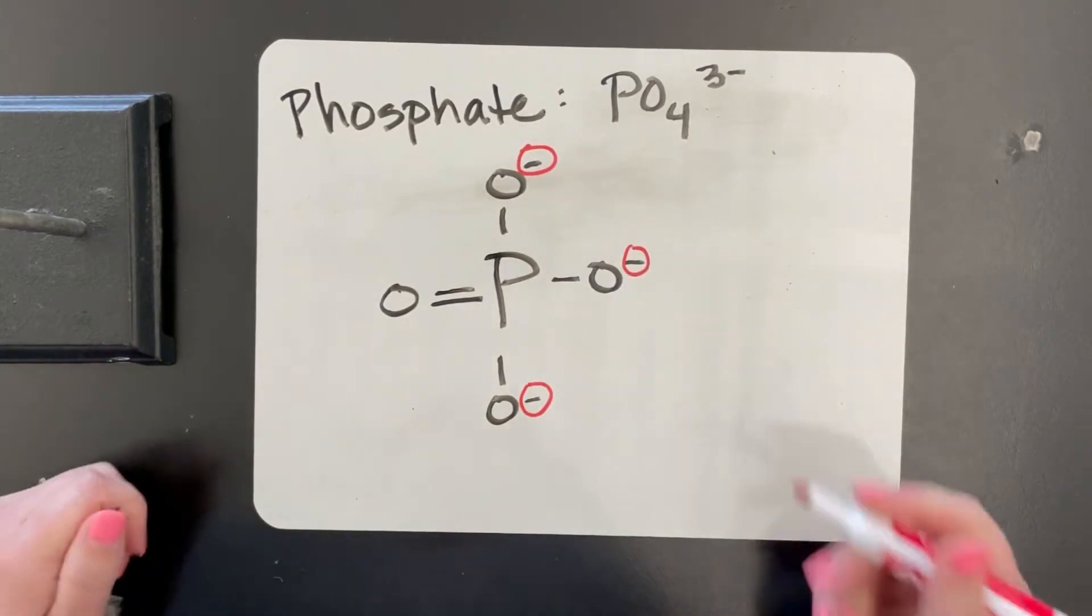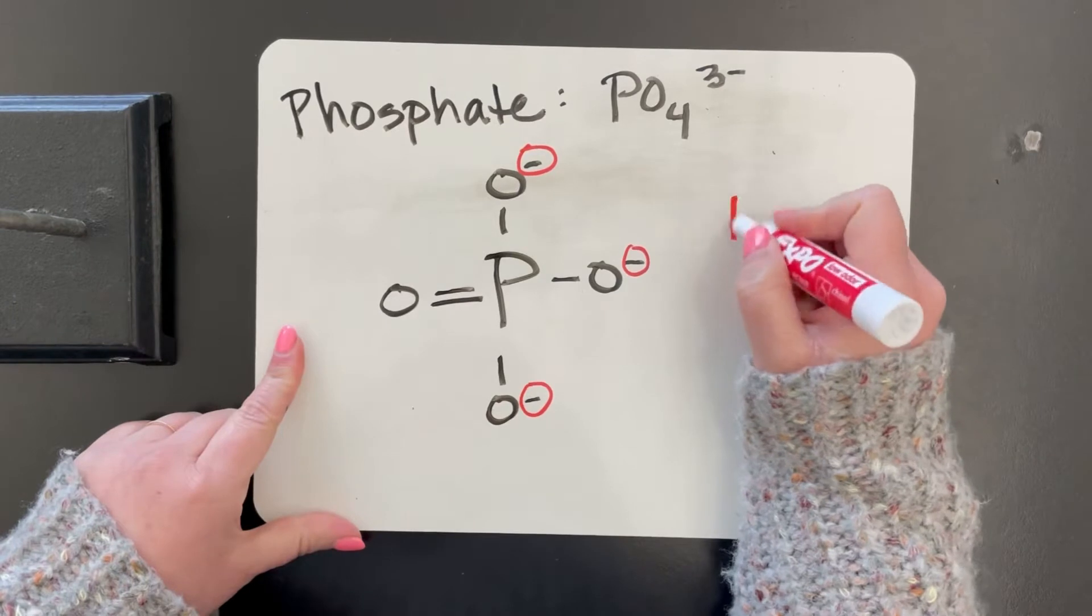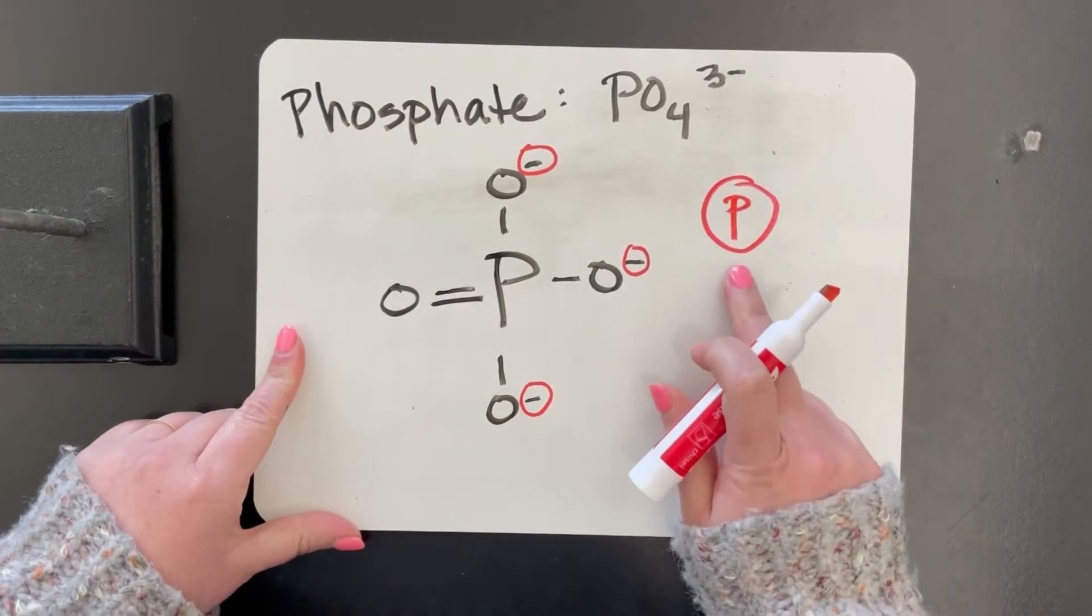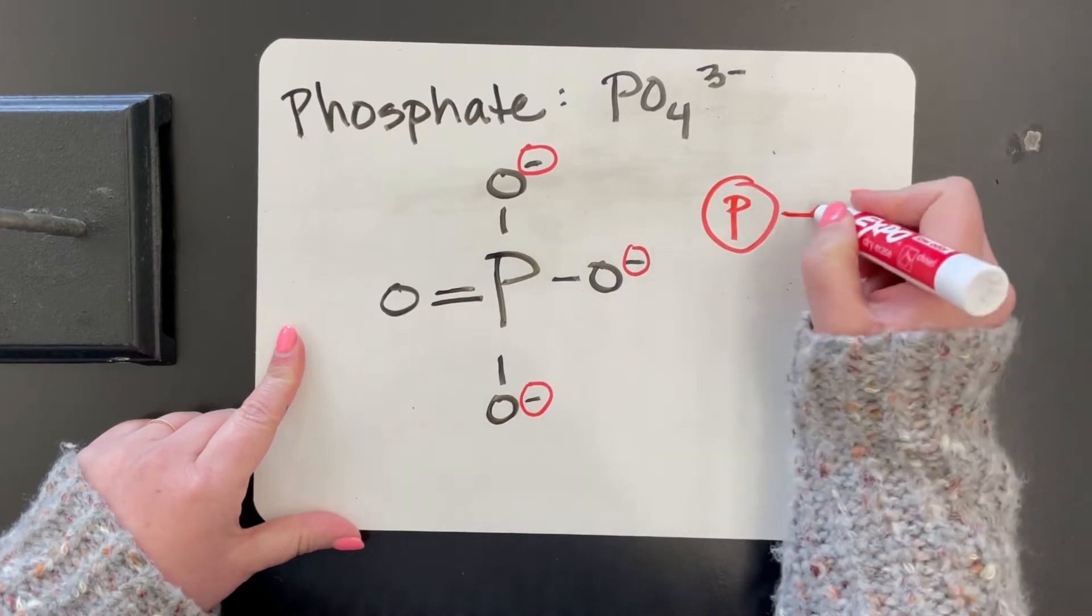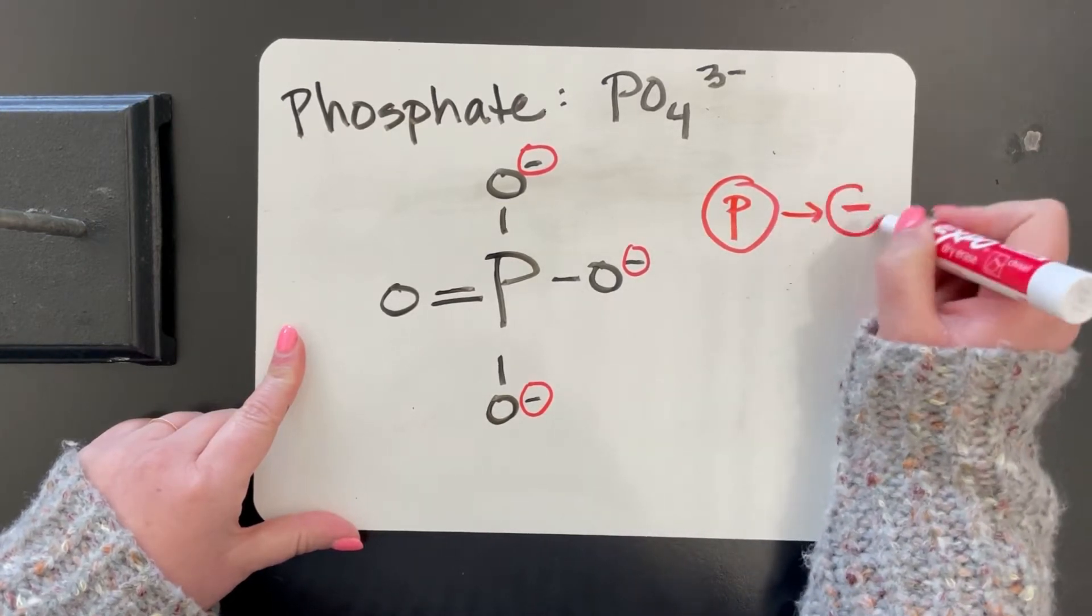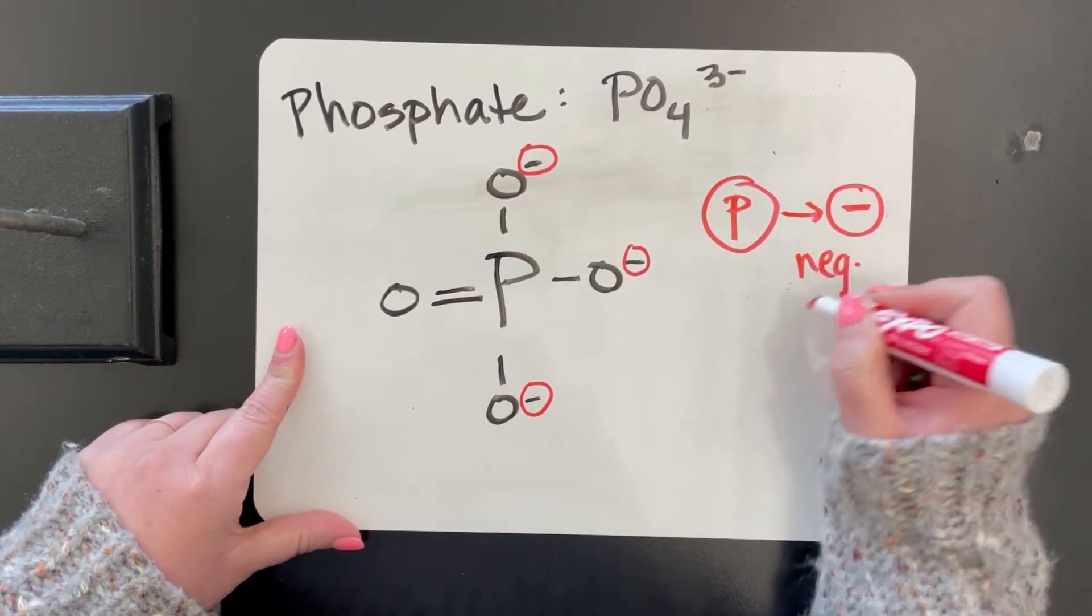So you don't need to memorize this structure necessarily, but what you should remember are all of these negative charges. So in other words, when you hear phosphate, which often we draw with just a P with a circle around it, when you hear phosphate you should think negative charge.